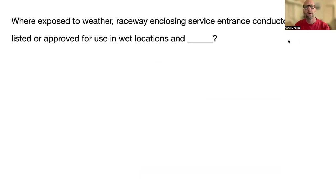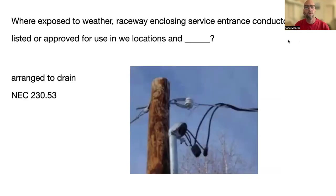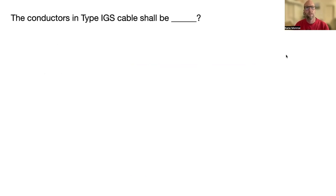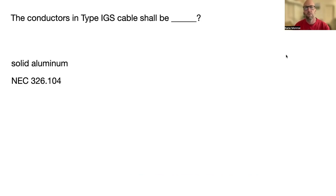In this picture you'll see how, down in the connection area, they're allowed to drain out — they don't drain into the conduit. That's NEC 230.53. The conductors in Type IGS cable shall be solid aluminum — that's NEC 326.104.